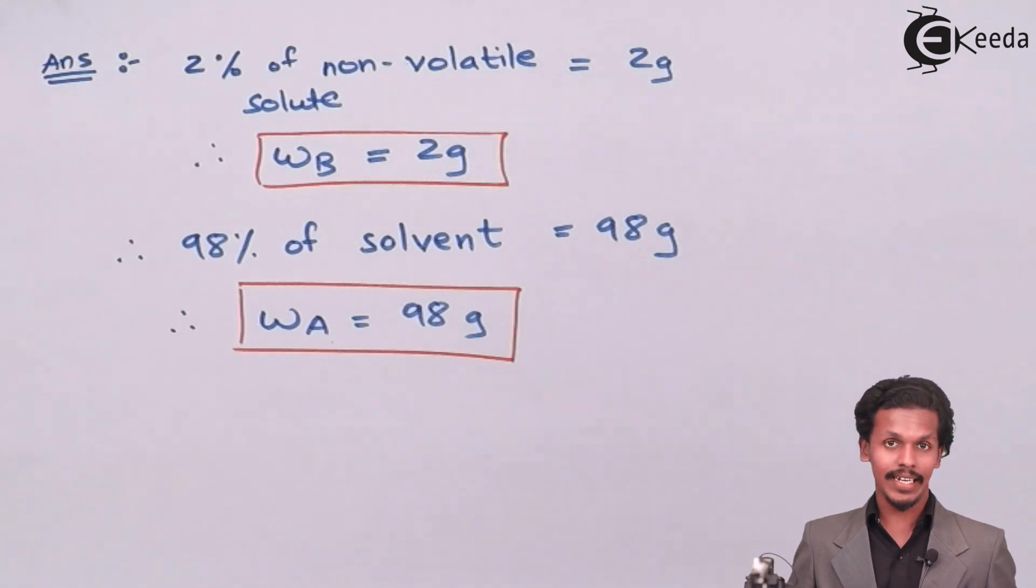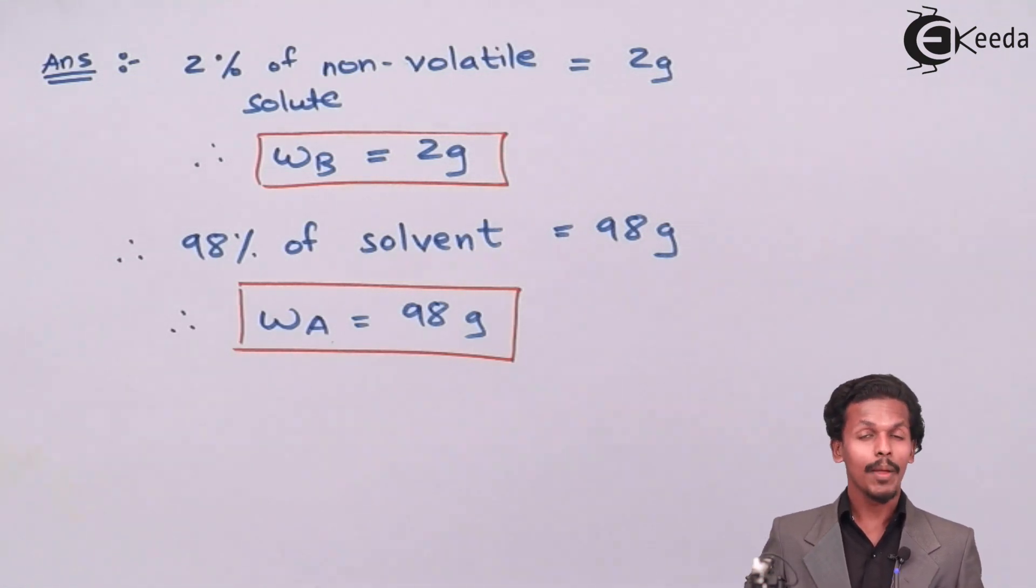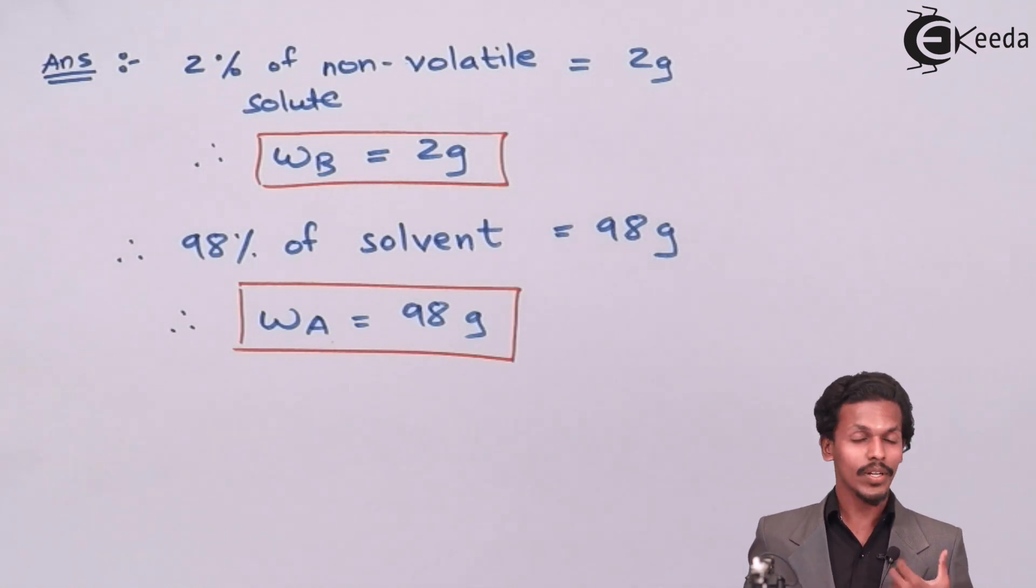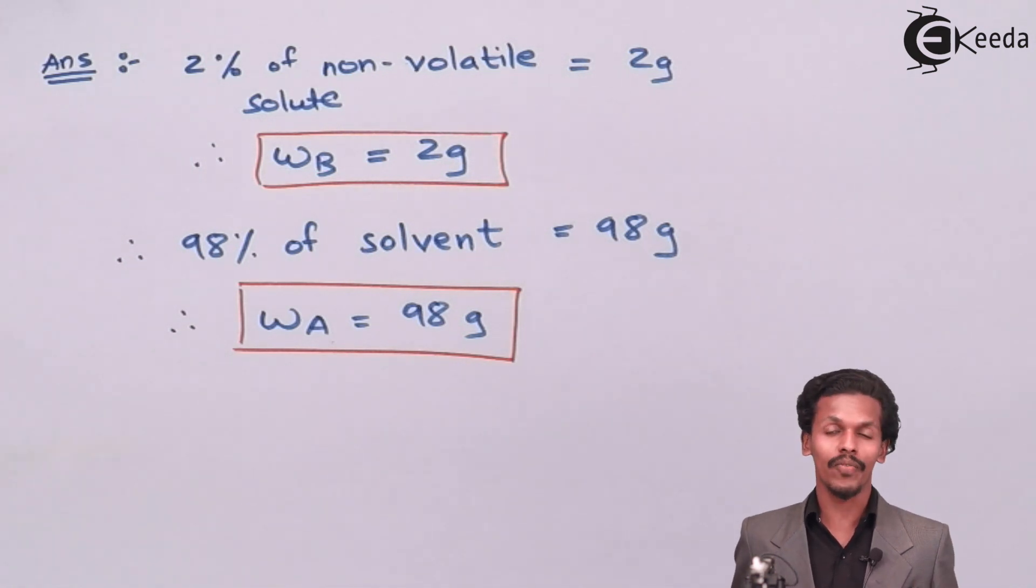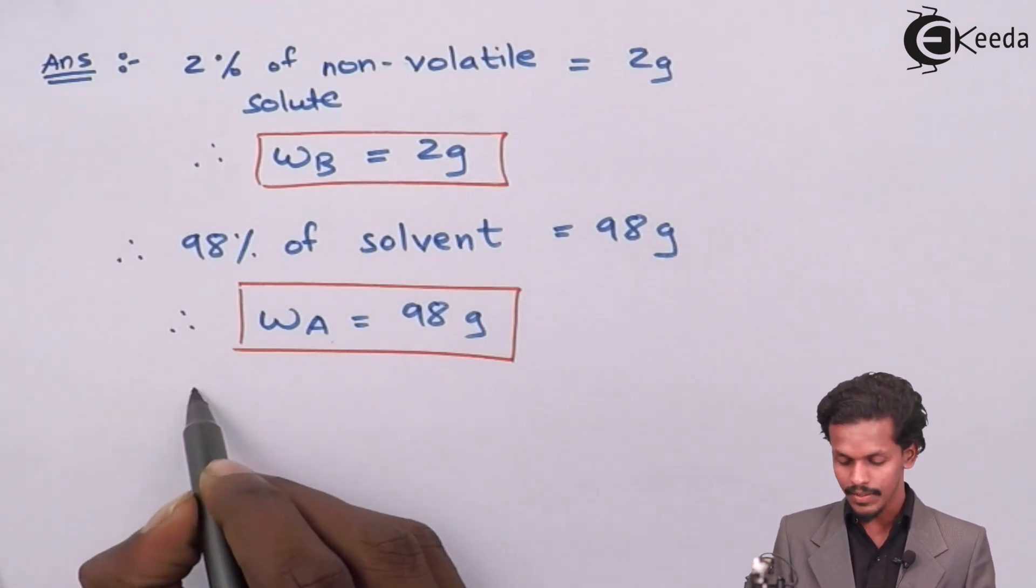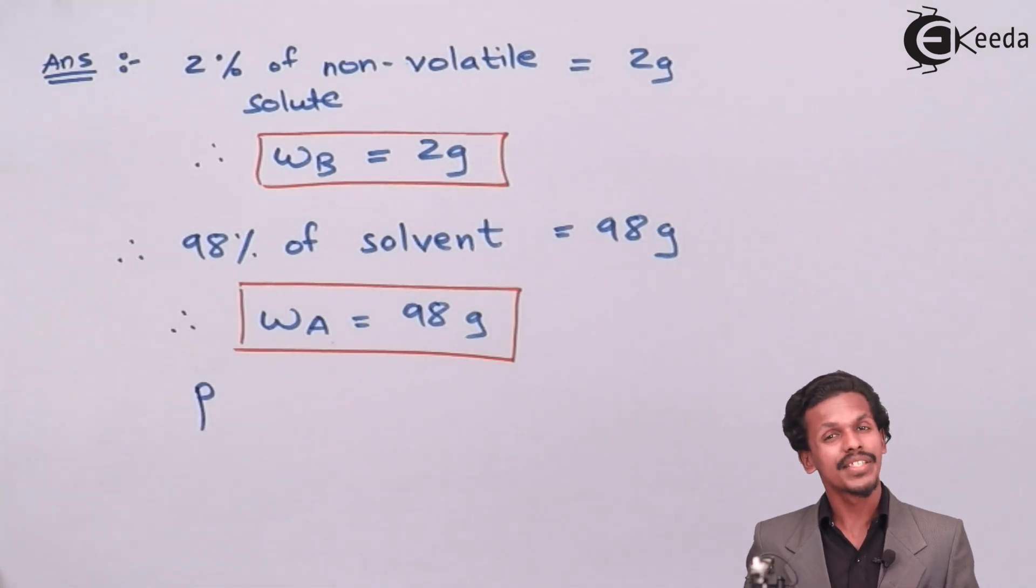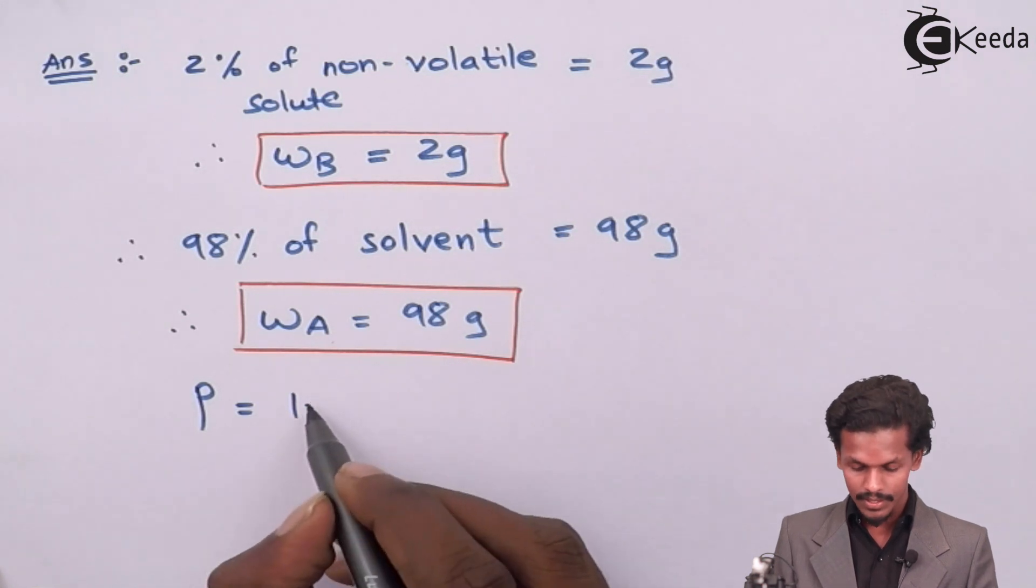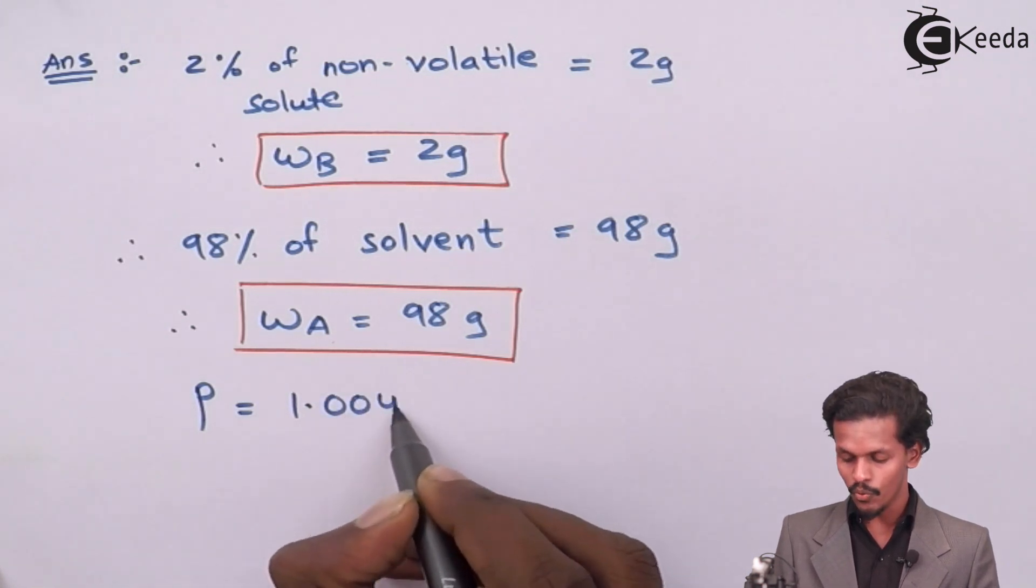And what are the further details that are given in the question? Among that the one detail which is given to us is the pressure exerted by the solution when 2% of non-volatile component is present in it, which means the vapor pressure of solution is 1.004 bar.